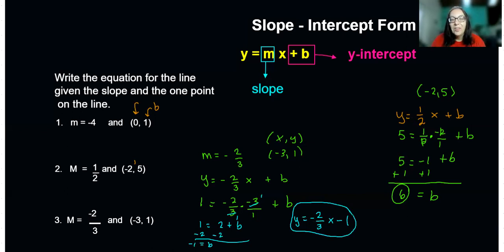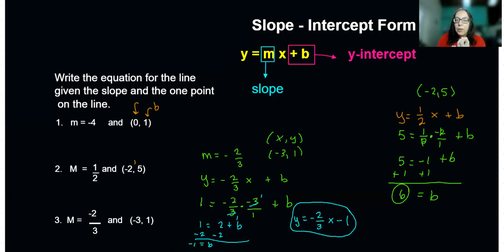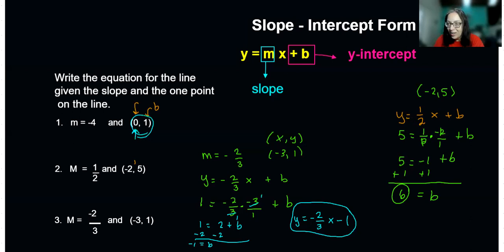Things to remember: you need m and b to use slope-intercept form. If you don't have them, you have to go find them. If in your ordered pair the x value is zero, the y value is your y-intercept. All right, have an awesome day — thank you for listening!